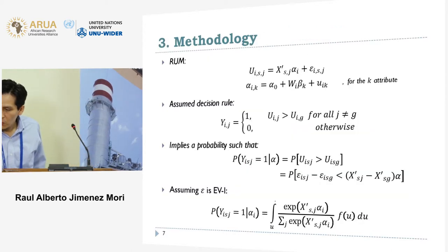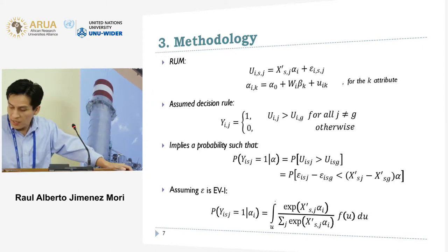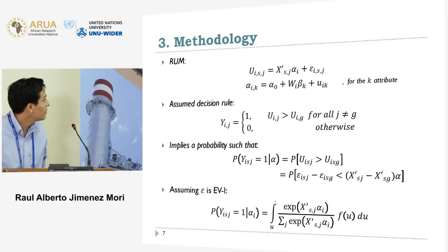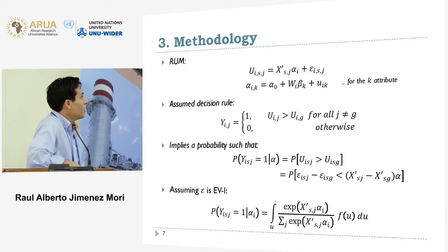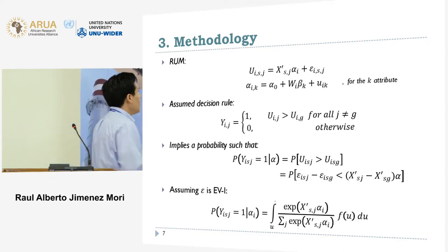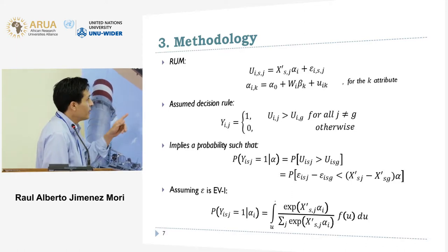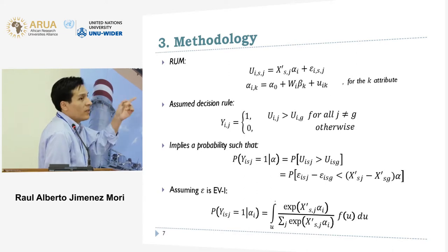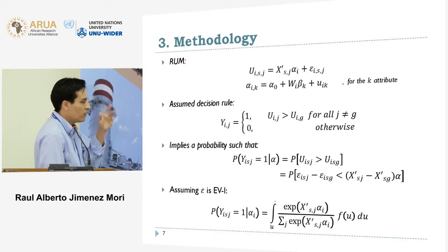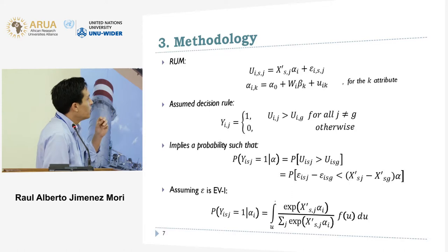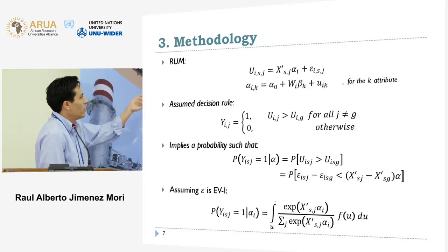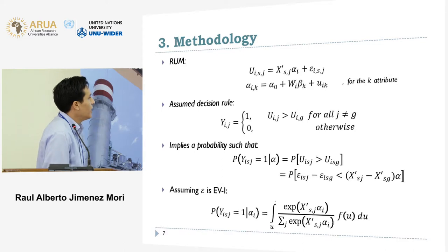This is a discrete choice setting, and I model it using a random utility model. The utility that a resident i obtains from a choice situation s, from an immigrant j, depends on the characteristics of the immigrant X and the weight preference alpha. I allow the preference of each resident to be heterogeneous — specific to that resident — plus a typical noise term. Further, I allow that weight preference to depend on W, reflecting socioeconomic characteristics of the resident, and beta reflects that association. Under standard assumptions and decision rules, this derives a mixed logit model, which I solve computationally.